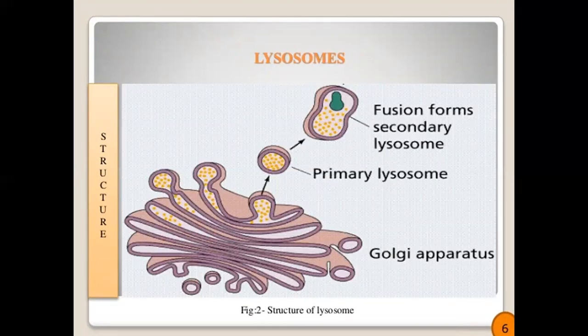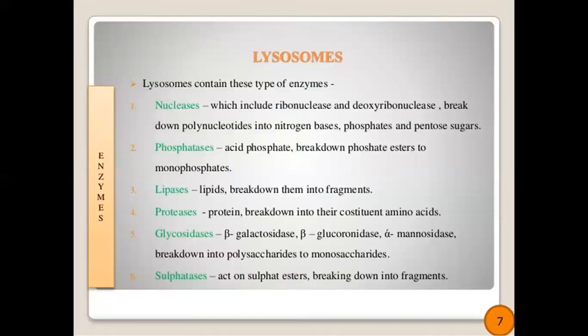The structure of lysosomes includes fusion from secondary lysosome, primary lysosome and Golgi apparatus. Enzymes in lysosomes include: nucleases (ribonucleases and deoxyribonucleases) that break down polynucleotides into nitrogen bases, phosphate and pentose sugar; phosphatases (acid phosphatase) that break down phosphate esters to monophosphate; lipases that break lipids into fragments; proteases that break proteins into constituent amino acids; glycosidases (beta-glycosidase, beta-glucuronidases and alpha-mannosidase) that break polysaccharides into monosaccharides; and sulfatases that act on sulfate esters.